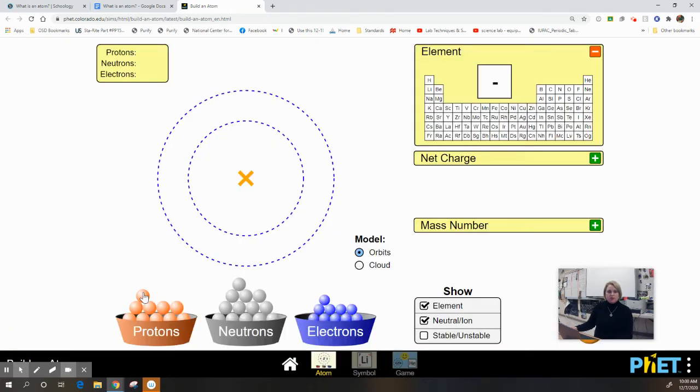To build the atom, you can take protons, throw them into the center of the atom, otherwise called the nucleus. And when you do that, the element symbol will appear on the periodic table highlighted. Here it is, He. And then the name will appear right above it. We built helium because helium has two protons.